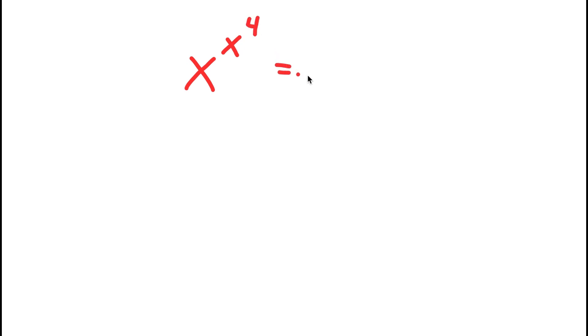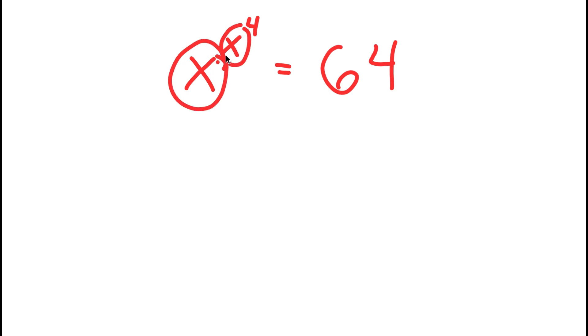In this video, I'm going to be teaching you how to solve the equation x to the power of x to the power of 4 is equal to 64. My only variable in this equation is x, which I have twice, and this is what I'm going to be solving for.